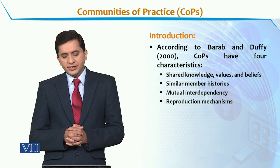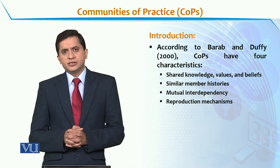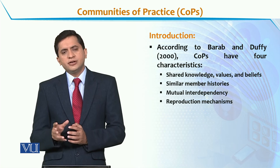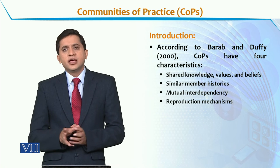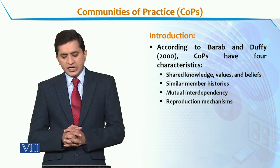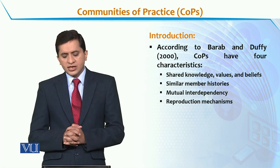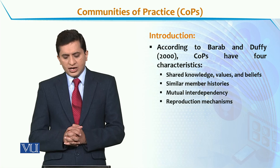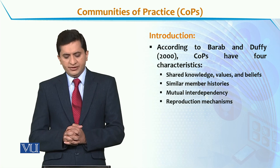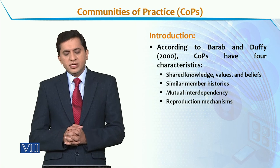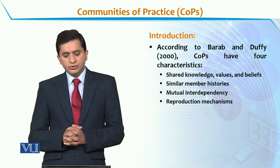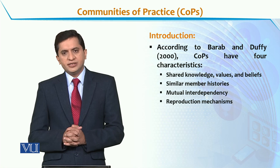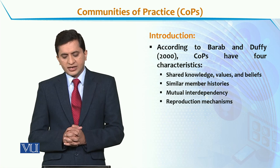According to Bob and Duffy, CoPs have four characteristics. This kind of online community network has four characteristics, and these are: shared knowledge, values and beliefs; similar member histories; mutual interdependency; and reproduction of mechanisms.